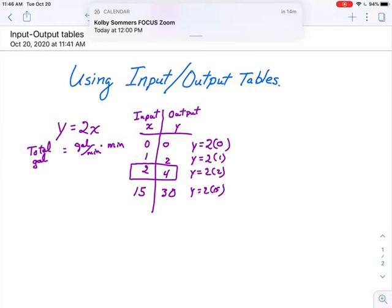So that's how you use an input-output table. Like, you can choose anything for the input. Plug it in, do the math, get the output. And that's the way the equation is designed because, see, the x being the input, we do the math with the input, see, in this case, 2 times x, to get the output.